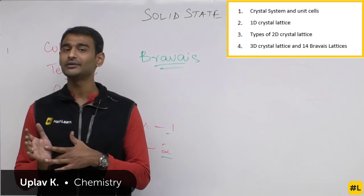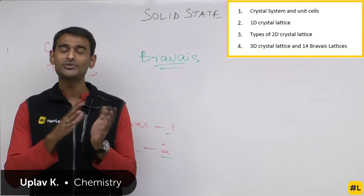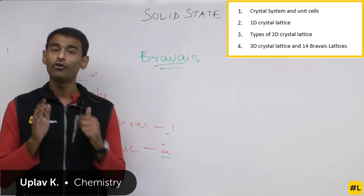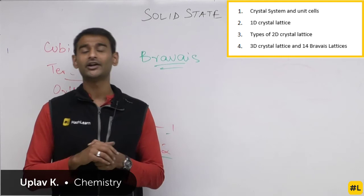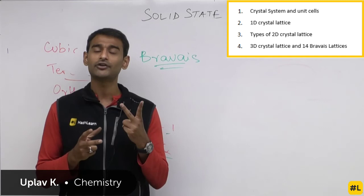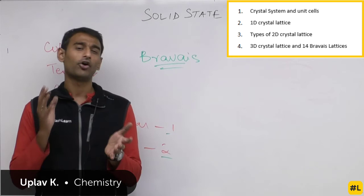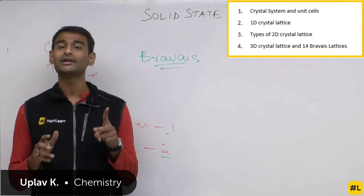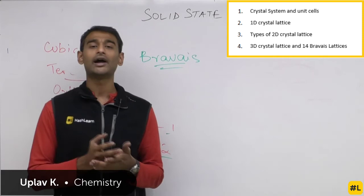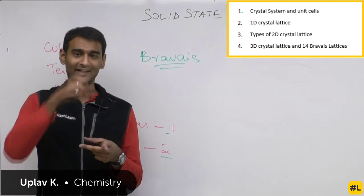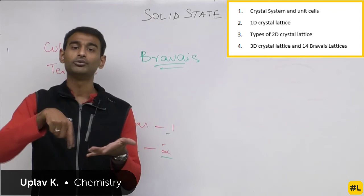We discussed the seven types of crystal system. Cubic is the most symmetrical — all sides equal, all angles 90 degrees. Tetragonal: two sides equal, all angles 90. Orthorhombic: no sides equal, all angles 90. Rhombohedral: all sides equal, no angles are 90. Monoclinic: no sides equal, two angles are 90. Triclinic: no sides equal, no angles are 90 — the least symmetrical. Hexagonal: two sides equal (a=b≠c), one angle 90 and the other angles 120 degrees.